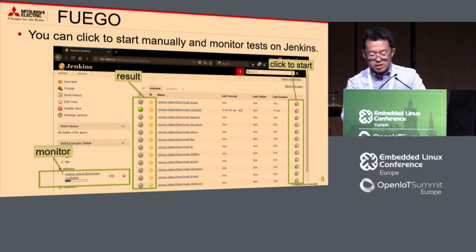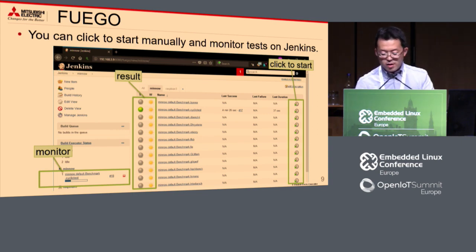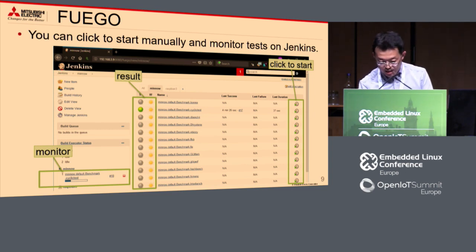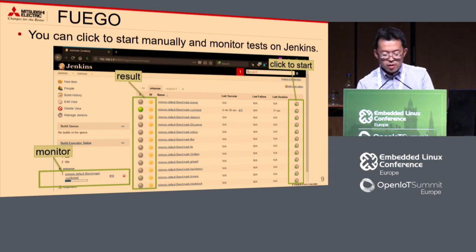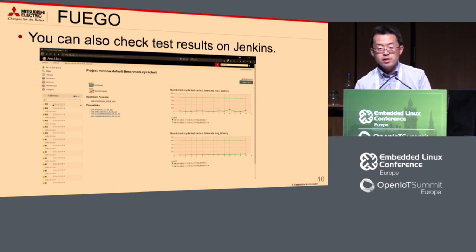For example, a test has output that can collect information and put it in a standardized output format. There is also a web control interface for starting, monitoring, and checking results with visualization. You can also check historical results on the web interface.